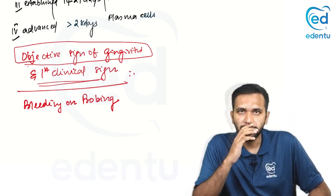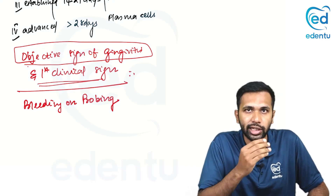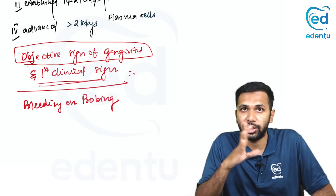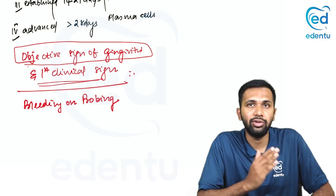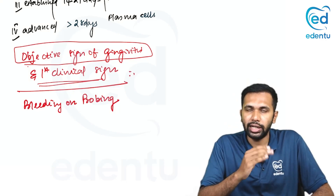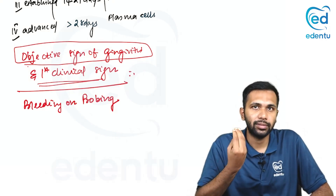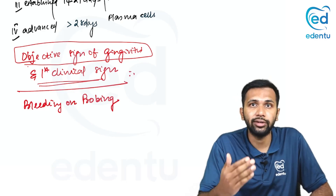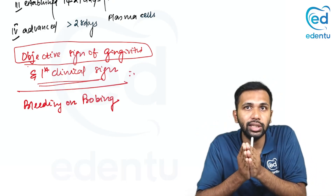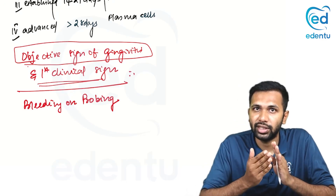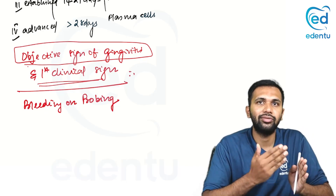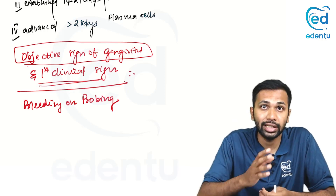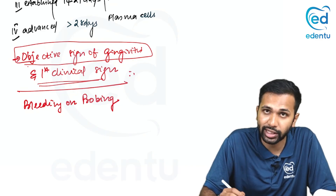What do you mean by objective sign? Color, for example, is subjective — I might call it red, another person calls it pink or maroon. It is subject to change based on the observer or clinician. But bleeding on probing is an objective sign: if it is present for me, it should be present for you also. It does not vary with the examiner. That is why it is referred to as the objective sign.